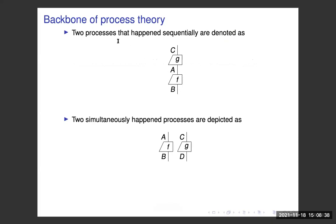Two processes that happen sequentially — one after another — can be denoted as a sequential connection of two boxes representing those two processes. On the other hand, two simultaneously happening processes can be depicted as two boxes placed in parallel.